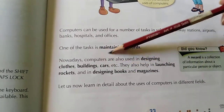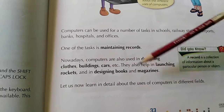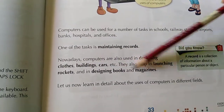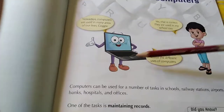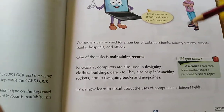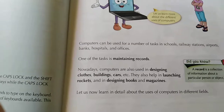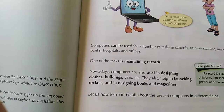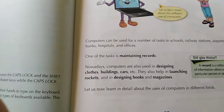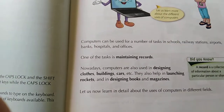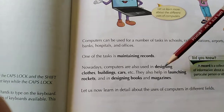Computers are also used in designing clubs, buildings, cars, and more. They also help in launching rockets and designing books and magazines. This book has also been created on a computer, so computers can be used to type and print things. Computers are also used in designing clothes — there are several digital prints nowadays, and all the clothes are designed on the computer and then printed by machines.